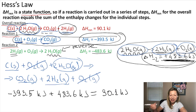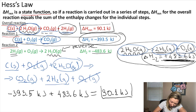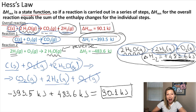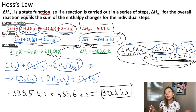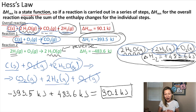That 90.1 kilojoules is exactly the same as the reaction enthalpy for the overall reaction. So we can see that Hess's law works, and it's fun to play around with different reactions — manipulate them, flip them, even multiply them. Because ΔH is an extensive property, when you multiply a reaction by 2, you also multiply ΔH by 2. I hope you have fun doing Hess's law questions, and see you in the next video.